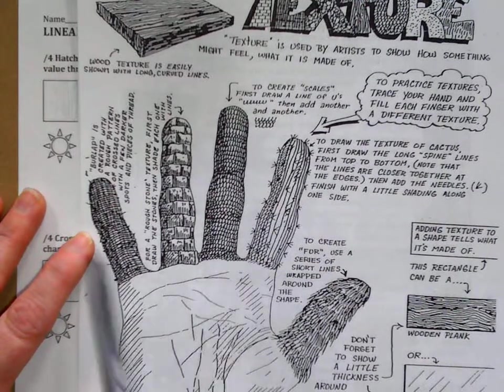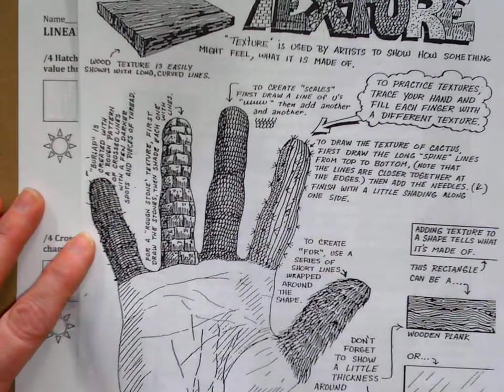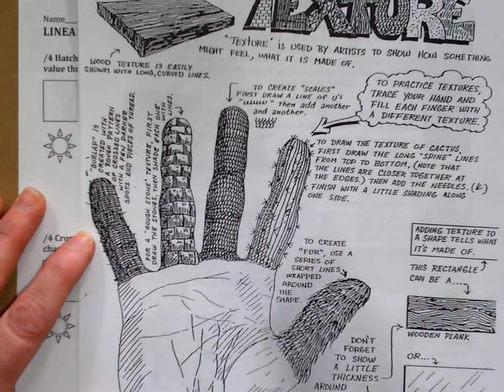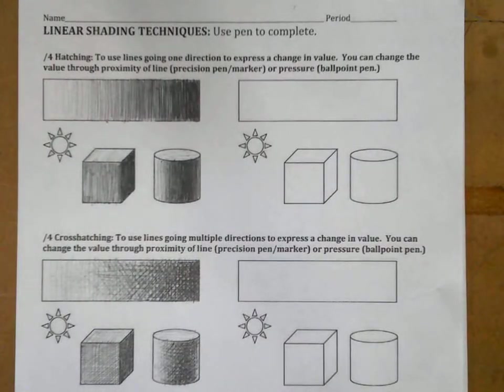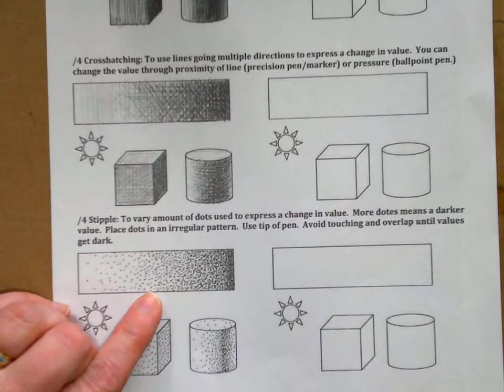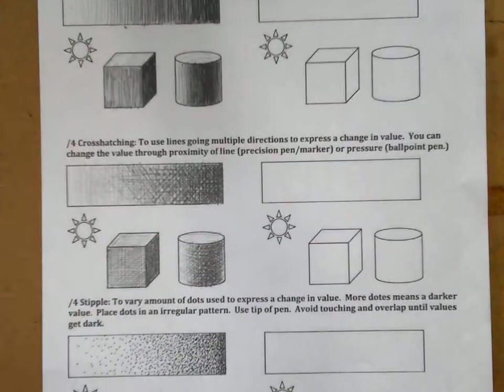This might be really helpful when you're working on your fancy creature, thinking about how you can apply these simple methods of hatching, crosshatching, and stippling to create different values.